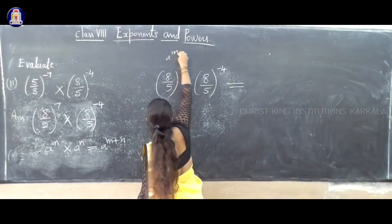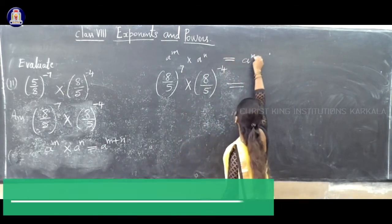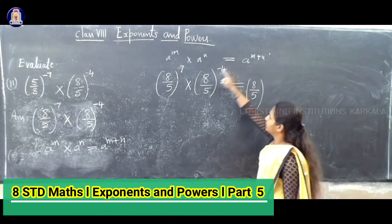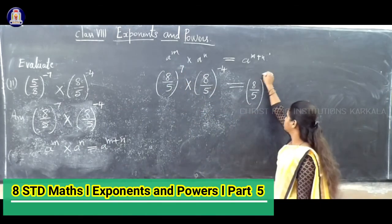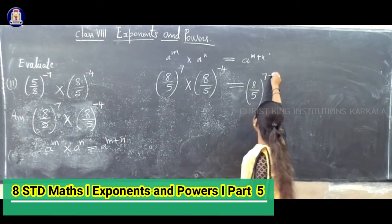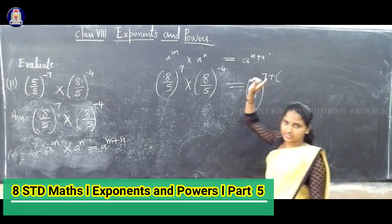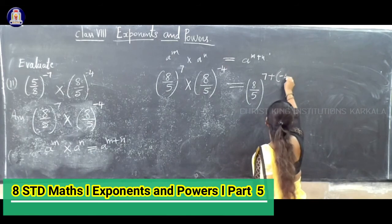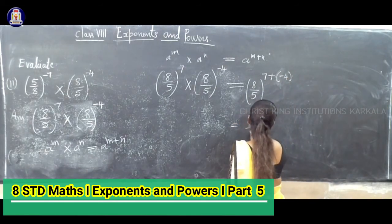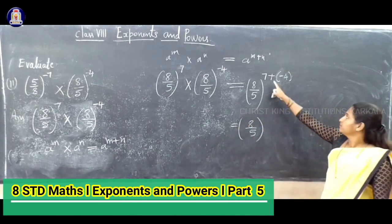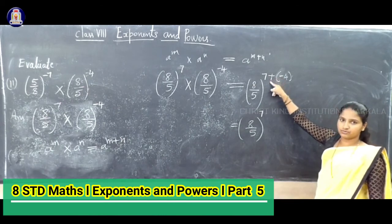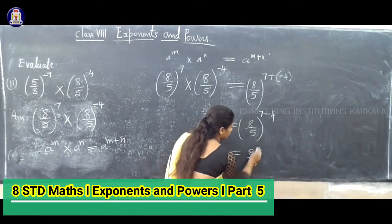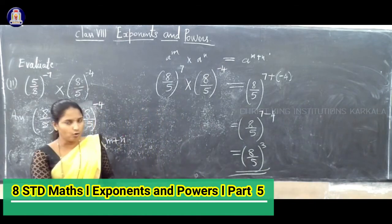So A is 8 by 5, the first power is 7, and the second power is minus 4. Write inside the bracket since the sign is minus. So we get 8 by 5 power 7 plus minus 4. Plus into minus is minus, giving 7 minus 4, which equals 3. The answer is 8 by 5 whole power 3.